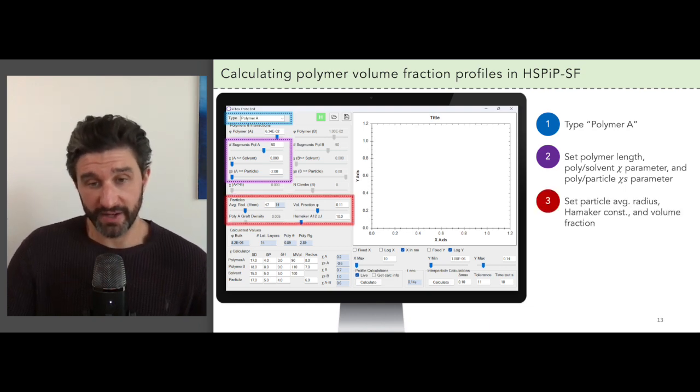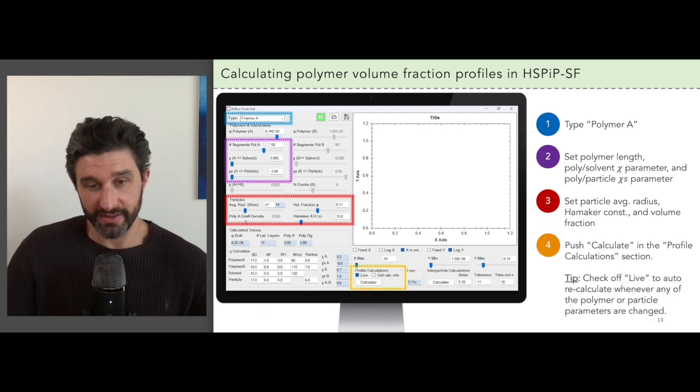Next we define the properties for the particles like the average radius, the Hammacher constant, and the volume fraction. And lastly, push the calculate button in the profile calculation section.